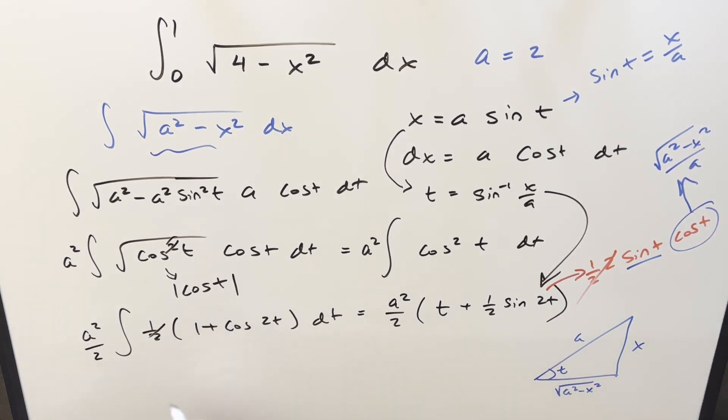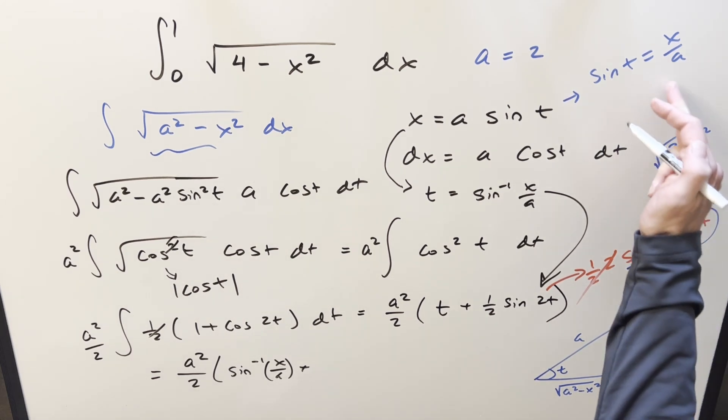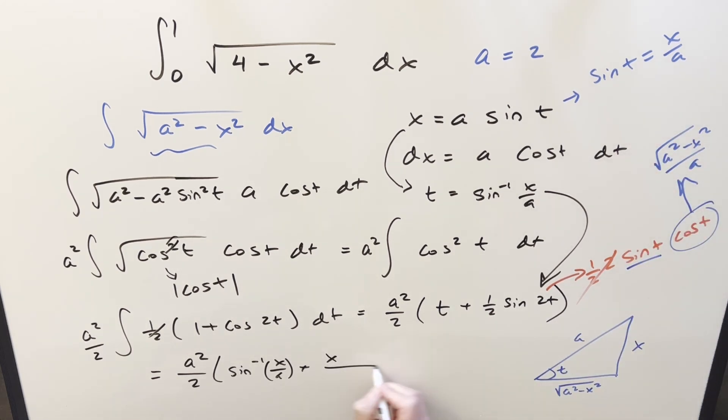So now we've got everything we need for our formula, we still have our a squared over 2 up front, t is going to be this, so we have arcsine of x over a plus, actually that's going away because we're going to be using this, so no one half, forget that,